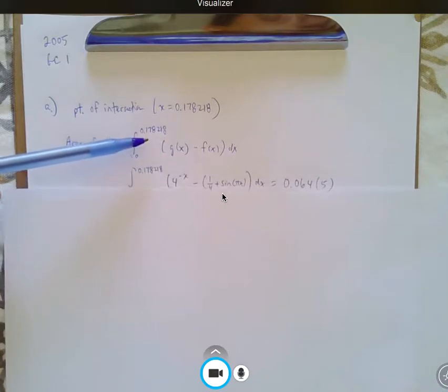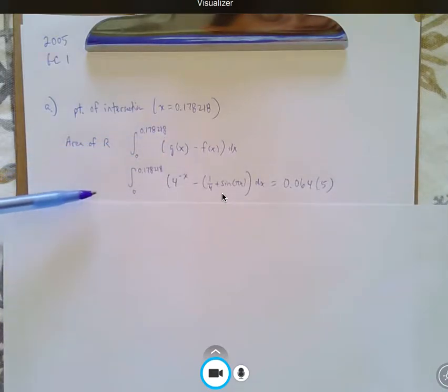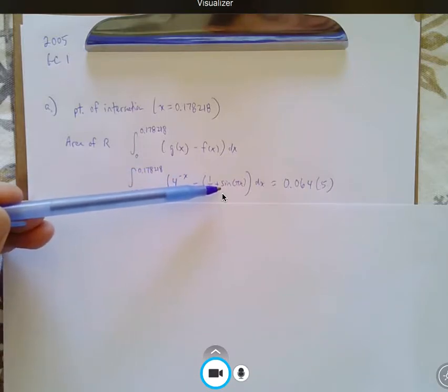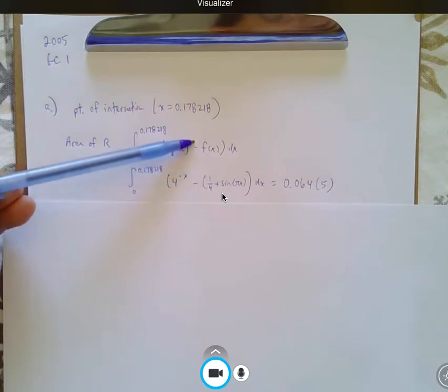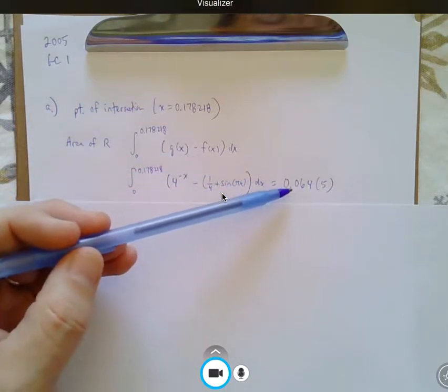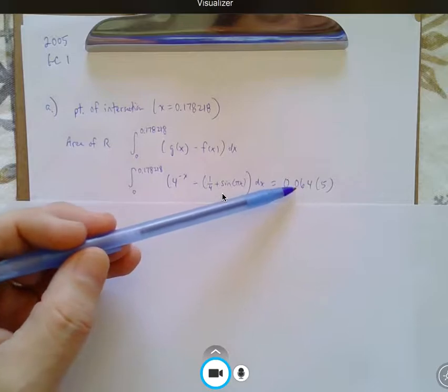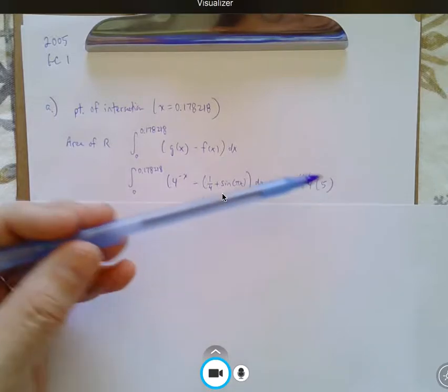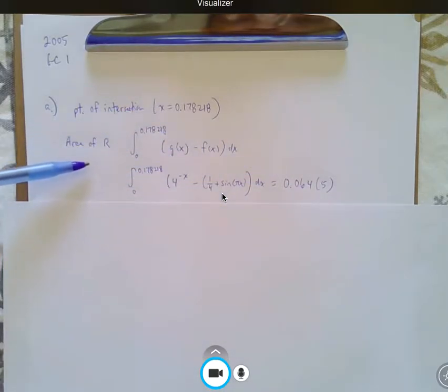You can write the whole thing, the actual g of x and the actual f of x. They'll accept either, so keep that in mind. And again, three decimal places rounded or truncated, so 0.064 or 0.065 would be correct. So, this is a pretty straightforward question. Probably the hardest part of this problem is typing it in your calculator, so practice that.